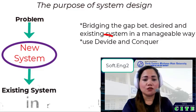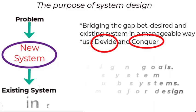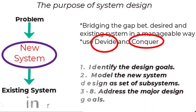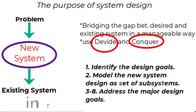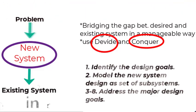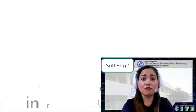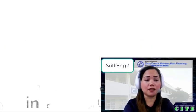How do we bridge the gap? Use divide and conquer: first, identify the design goals; model the new system design as a set of subsystems; and address the major design goals. These steps bridge the gap between the problem and the existing system in system design.